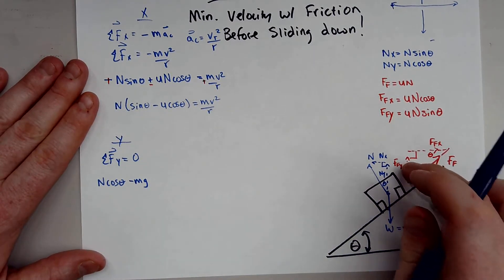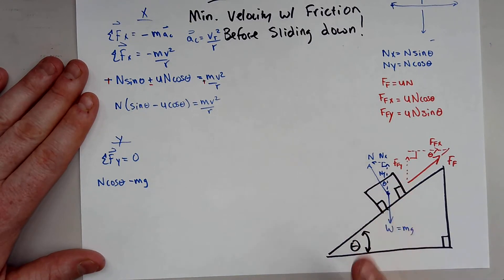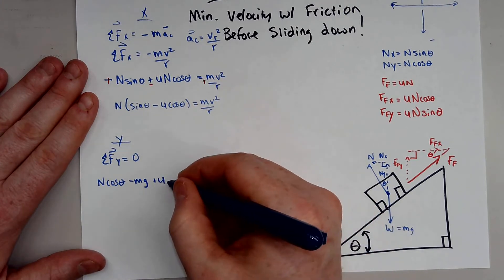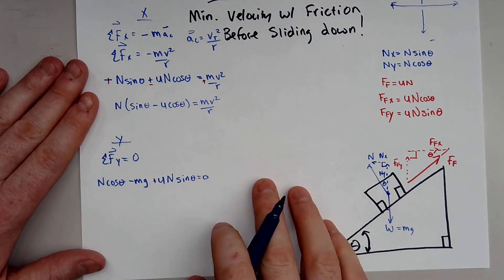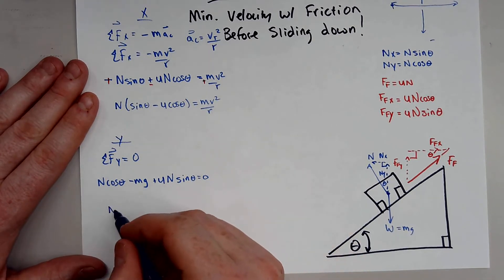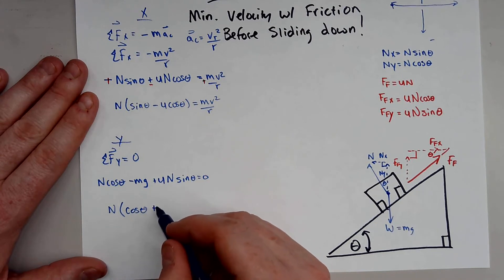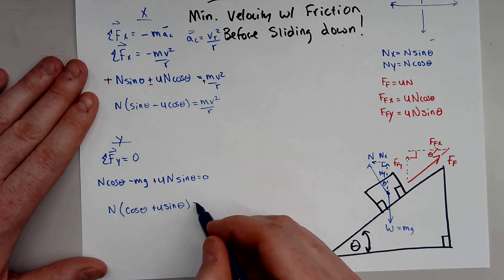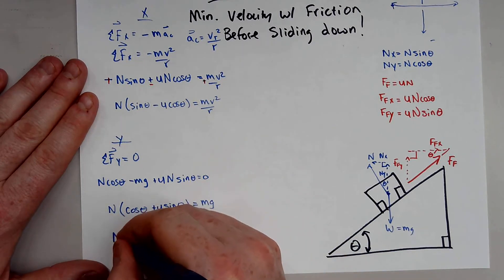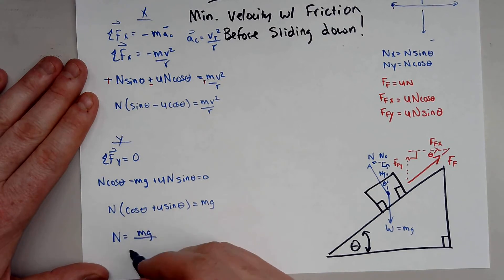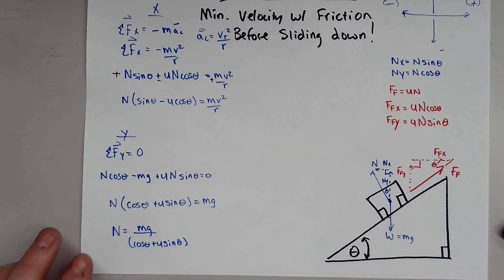The frictional component in the y-direction is actually pulling the car up as well — that's the trick. So we add mu·N sine theta, and the whole expression equals zero. Moving mg over and factoring out N gives: N(cosine theta + mu sine theta) = mg, so the normal force is N = mg / (cosine theta + mu sine theta).